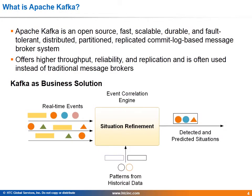What is Apache Kafka? Apache Kafka is an open source, fast, scalable, durable and fault tolerant, distributed, partitioned and replicated commit log based message broker system. Kafka offers higher throughput, reliability and replication, and is therefore often used instead of traditional message brokers such as JMS, AMQP, etc.